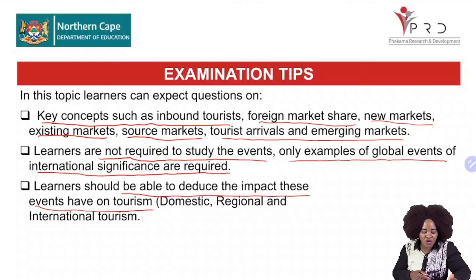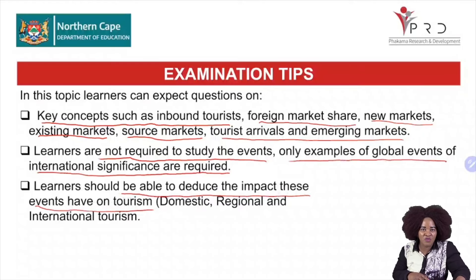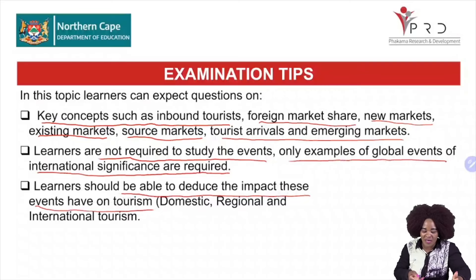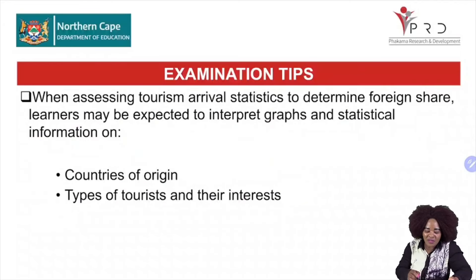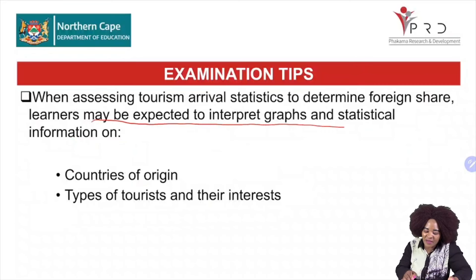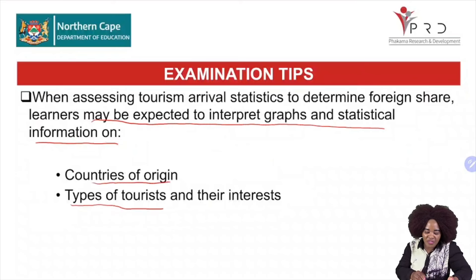All of those you need to know for the exam. Also, Grade 12 learners, when assessing tourism arrival statistics to determine foreign market share, you may be expected to interpret graphs and statistical information on countries of origin and also the types of tourists and their interests. You must know the country, city, and even the continent where these events are taking place, or took place in the case of unforeseen occurrences and political situations.